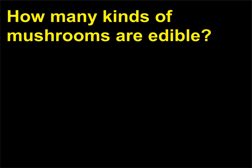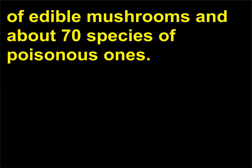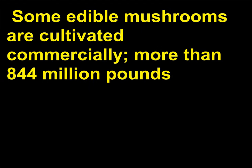How many kinds of mushrooms are edible? Among the basidiomycetes, there are approximately 200 varieties of edible mushrooms and about 70 species of poisonous ones. Some edible mushrooms are cultivated commercially — more than 844 million pounds (approximately 382,832 metric tons) are produced in the United States each year.